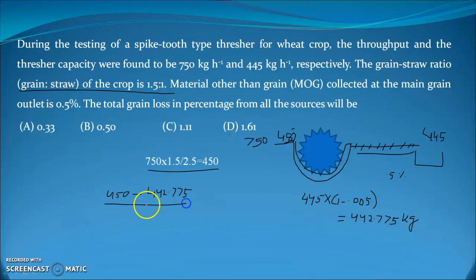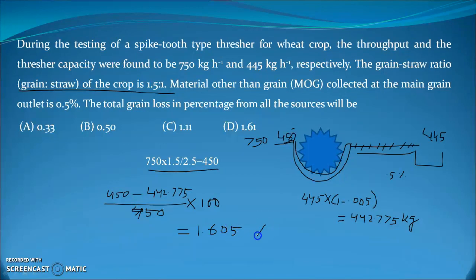To find the percentage loss: (450 − 442.775) / 450 × 100 = 1.605%. So the answer is approximately 1.61%, which corresponds to option D.